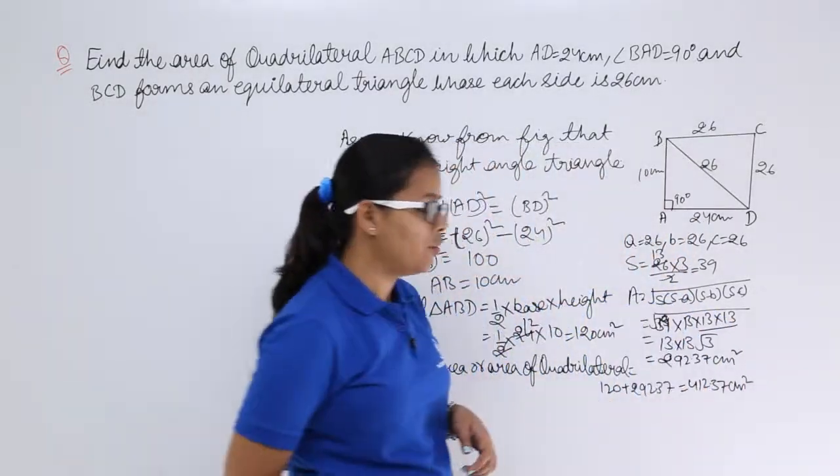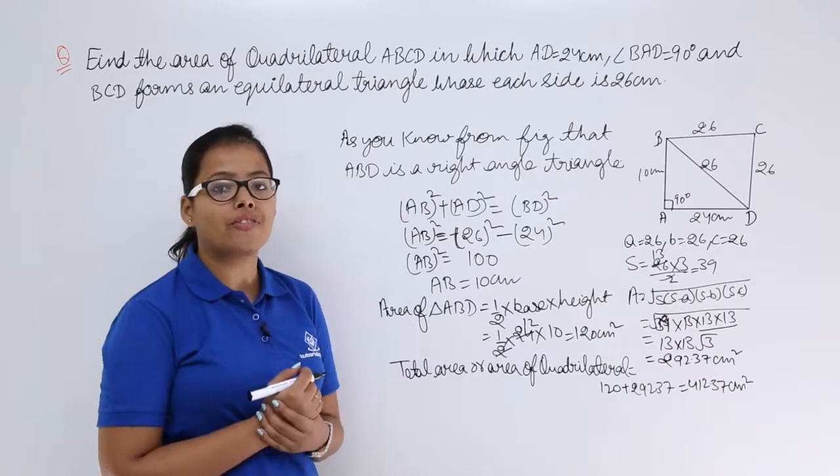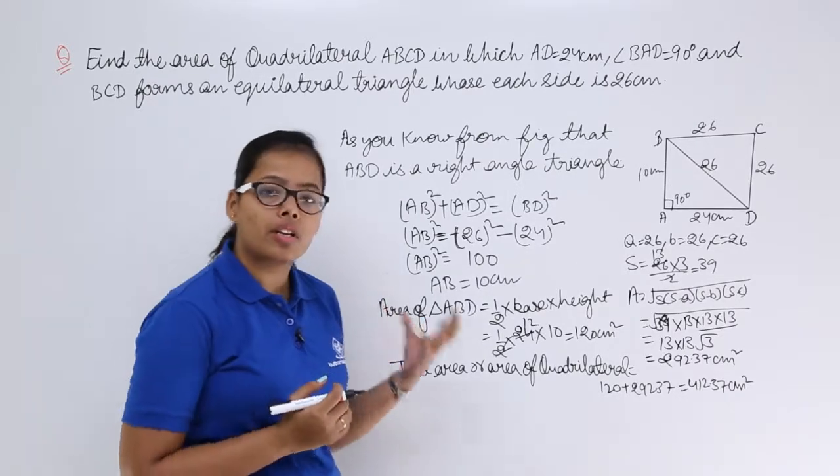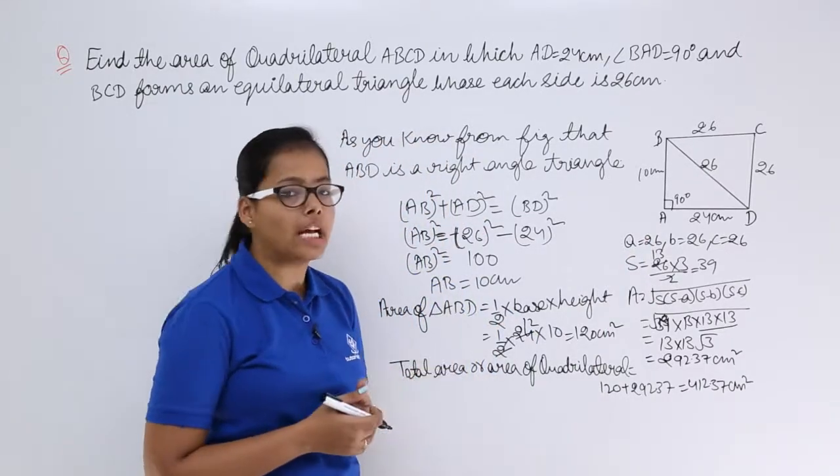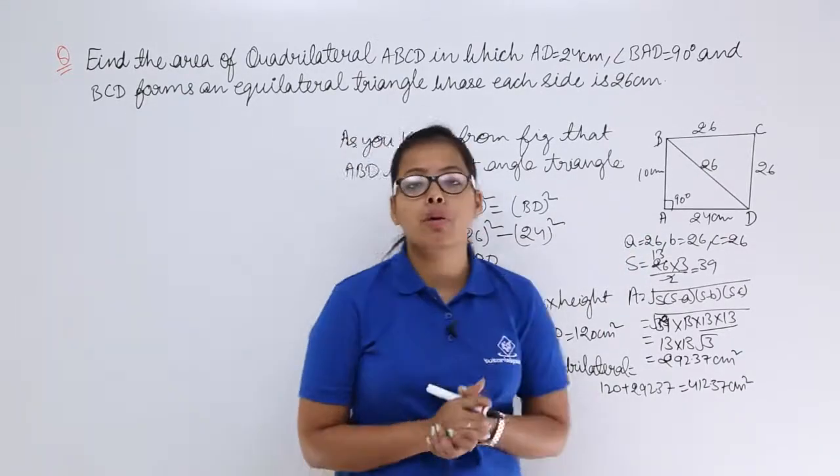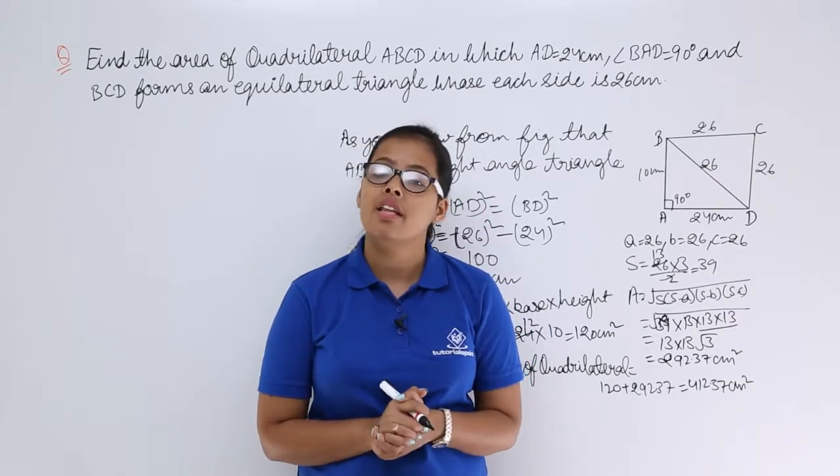So we used Heron's formula on one triangle and there is a simple formula for the right angle triangle. So I hope there should be no doubt in this problem. I will be taking more problems in coming video lectures. Thank you.